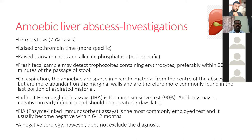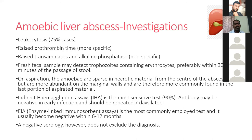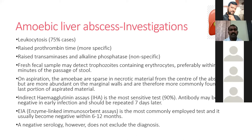Investigations for amoebic liver abscess: WBC count is raised, producing leukocytosis, and prothrombin time is elevated. Compared to pyogenic liver abscess which shows elevated alkaline phosphatase, amoebic liver abscess shows elevated prothrombin time, which is more specific. There is also non-specific elevation of transaminases. Fecal examination may detect trophozoites containing erythrocytes.